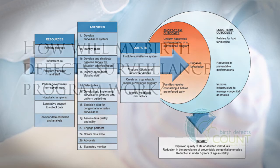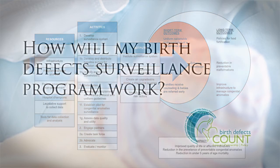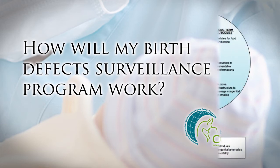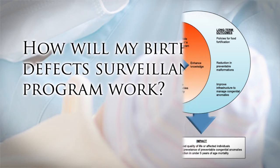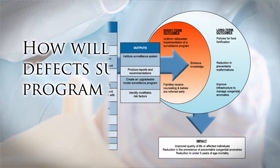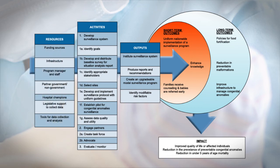Logic models can also be created even before you have determined the details of how your program will work. Instead of developing a logic model from left to right, try starting on the right side with what you would like the program to accomplish over time and make a list of long-term outcomes. Next, move left on the logic model toward the immediate and short-term outcomes and list those. Then describe outputs, activities, and resources. By starting on the right side first, you can keep focused on what you want your program to accomplish while you plan how it will work.